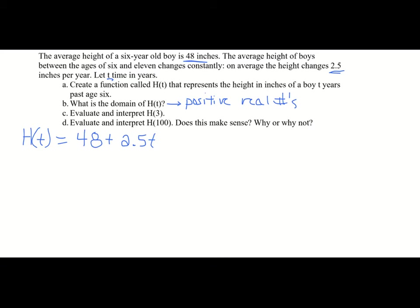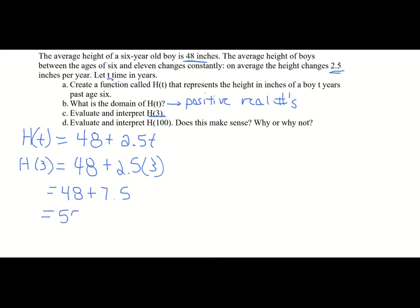Now we need to interpret and evaluate H of 3. Remember T is years past age six, so H of 3 means three years past age six, which is a nine-year-old. We calculate 48 plus 2.5 times 3. 2.5 times 3 is 7.5, so 48 plus 7.5 equals 55.5 inches. On average, a nine-year-old boy should be about 55.5 inches tall.